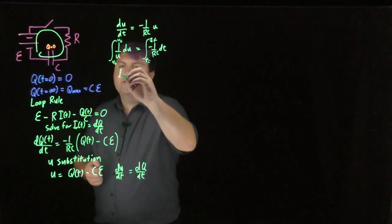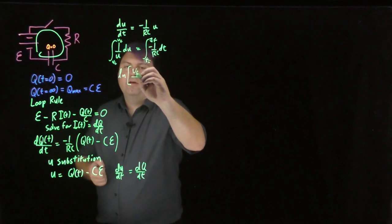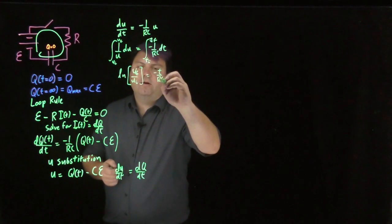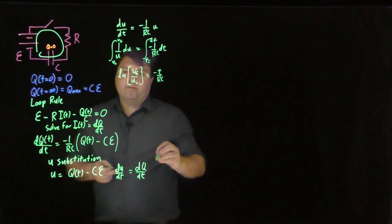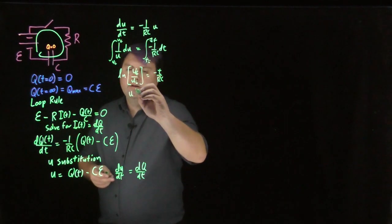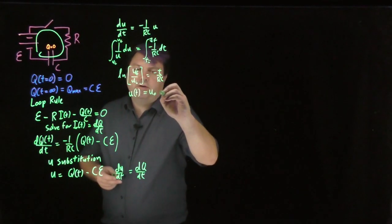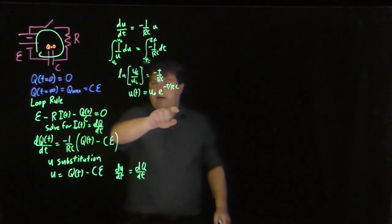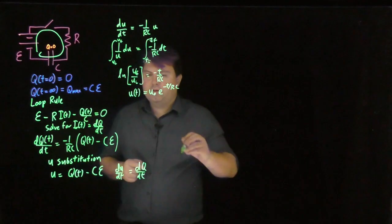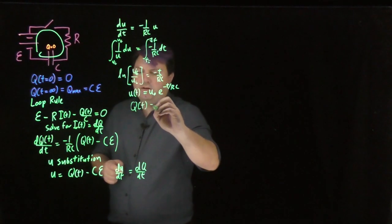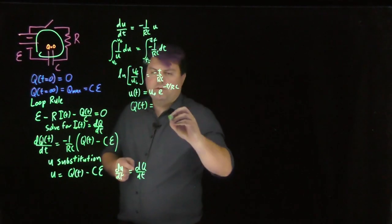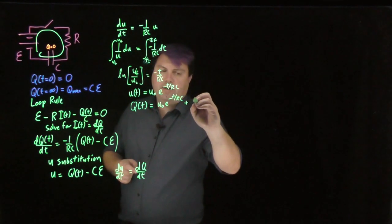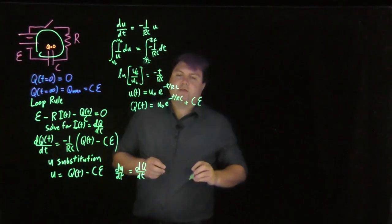This gets us the natural log of U_f over U_i equals negative t over RC. So we get that U as a function of time equals U_naught times e to the negative t over RC. Now we can go back into the substitution, so Q(t) equals U_naught times e to the negative t over RC plus C times the voltage of the battery.